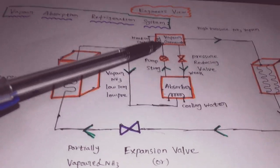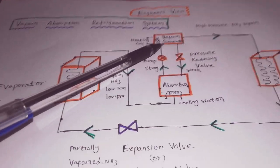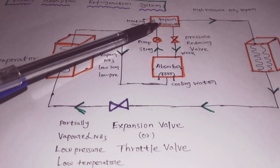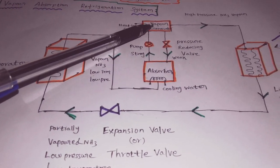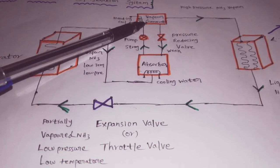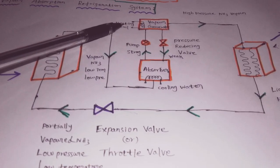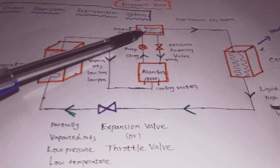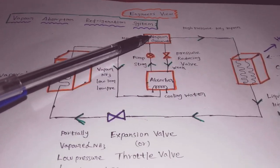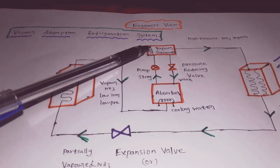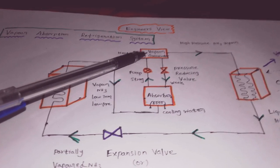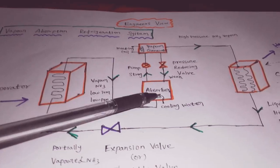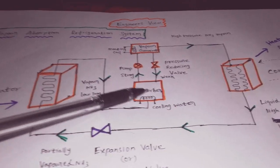Let's consider the vapor generator. There is a heating coil inside the vapor generator containing ammonia and water. When heat is added, the ammonia converts to vapor. The generated ammonia vapor then passes through the pressure-reducing valve.